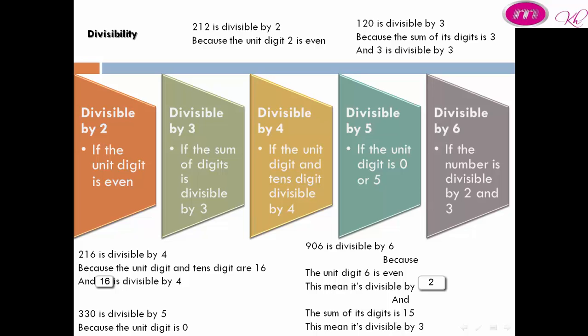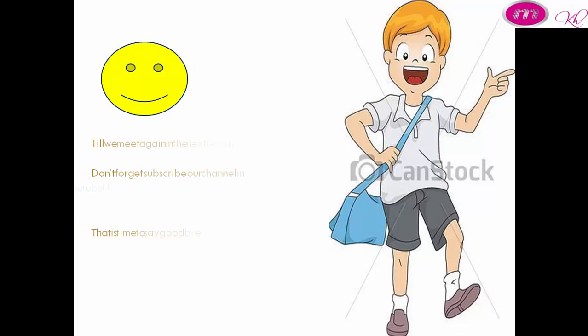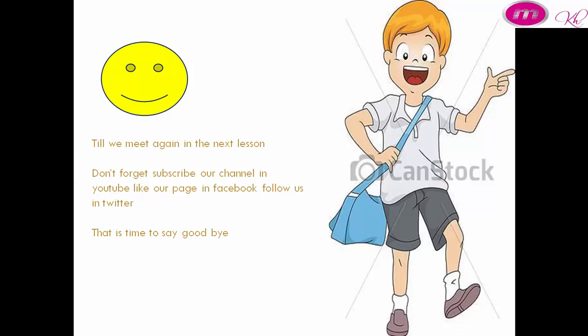906 is divisible by 6 because the unit digit 6 is even, meaning it is divisible by 2, and the sum of its digits is 15, which means it is divisible by 3. Until we meet again in the next lesson, goodbye.